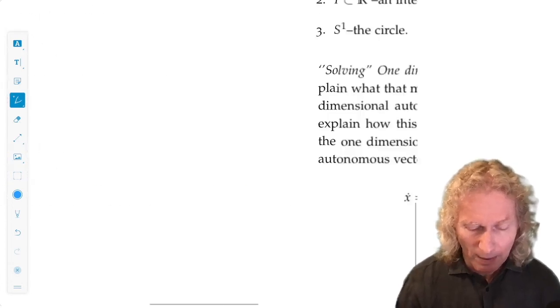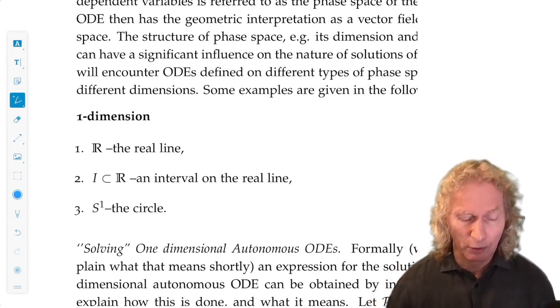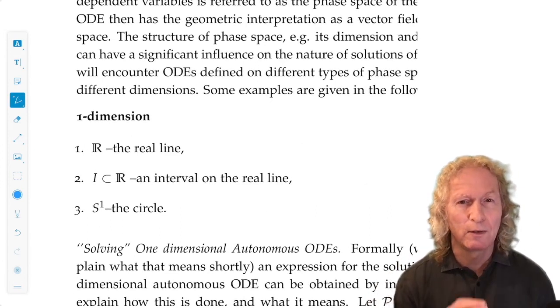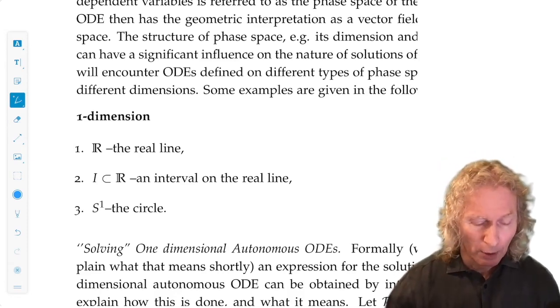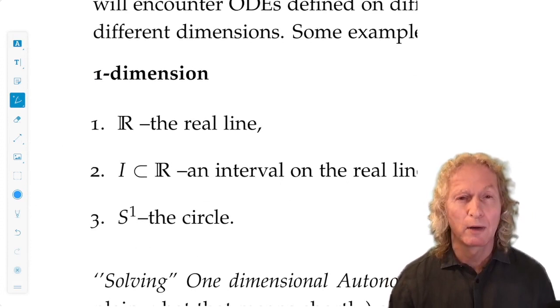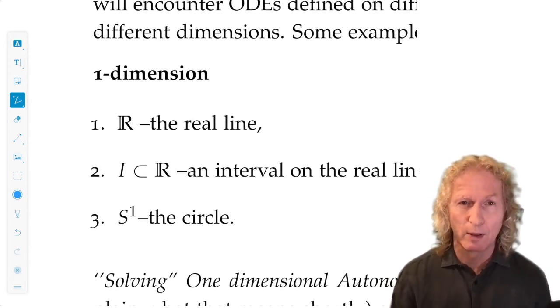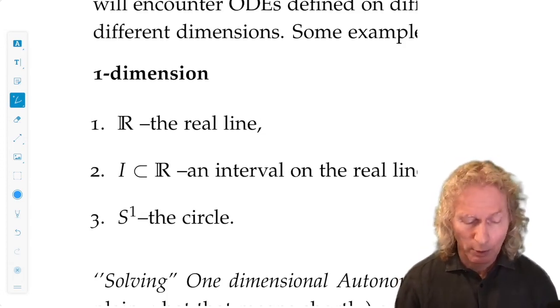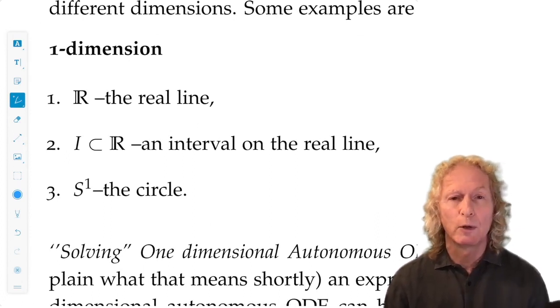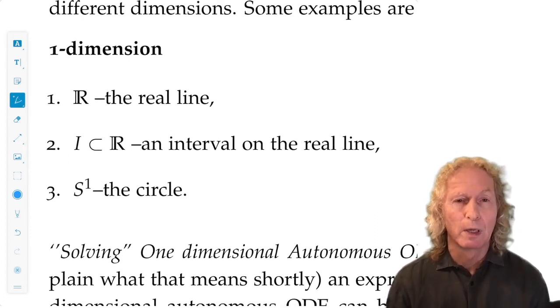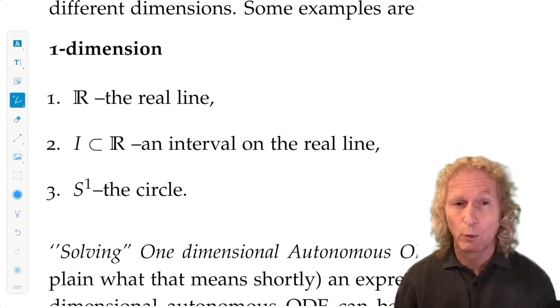Now these phase spaces, the geometry and topology of the phase spaces play a very significant and crucial role in the nature of solutions. For example, in one dimension, what are the possible phase spaces? It could be the real line R, it could be a subinterval of the real line, or some ODEs can have angular variables, in which case it could be a circle S^1.